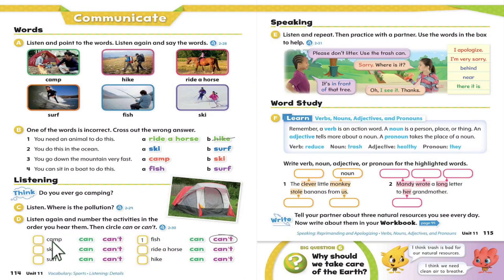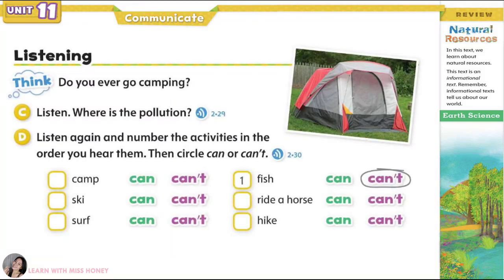Page 114. Communicate Listening. Listen: Where is the pollution? One. Are you ready, Callie? Hurry up and get your fishing pole, let's go! Eww, Michael, look at all that trash in the water! Oh no! We can't fish now, it's dirty. We don't want to get sick. Yeah, let's go home.